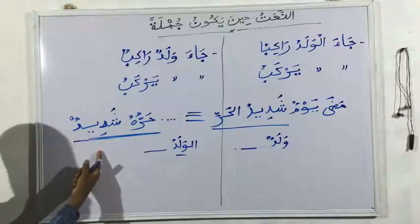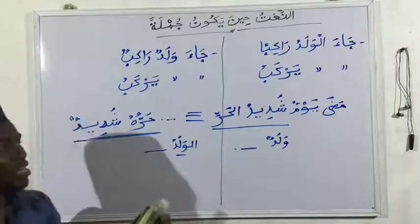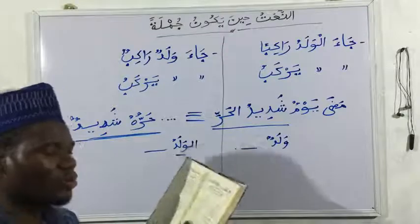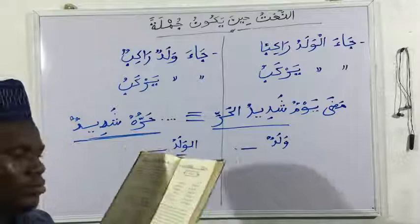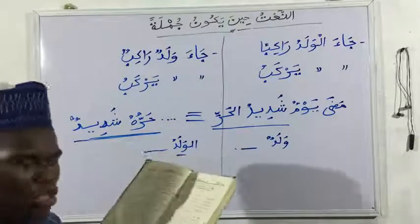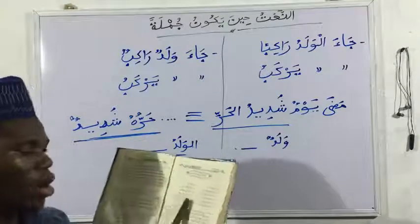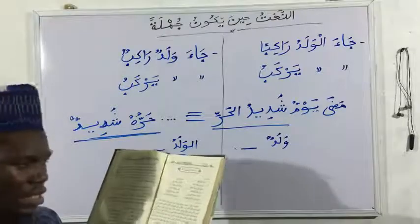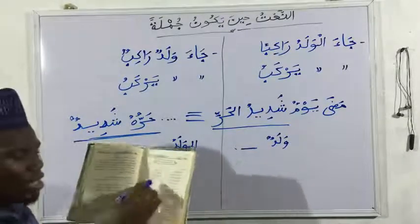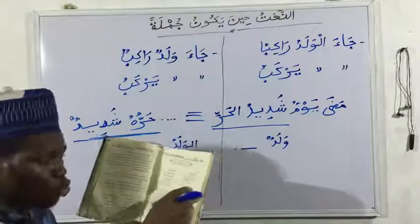Number five: awqadtu misbahan kawiyyan nuri — I kindled a lamp whose light is strong. Kawiyyan nuri means strong in light — the light is strong. It can be said as: awqadtu misbahan nuru hu kawiyyun — I put on a lamp; its light is strong. They transform kawiyyan nuri to nuru hu kawiyyun: the mudaf — nur — comes forward, takes a damir referring back to misbah.